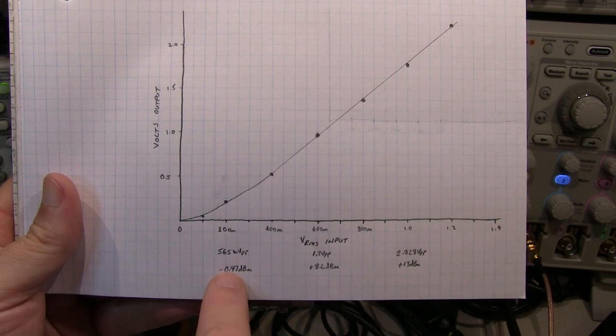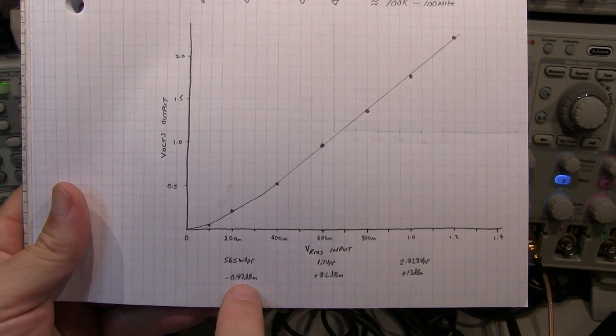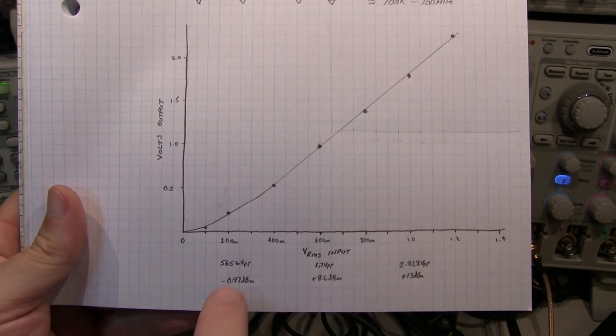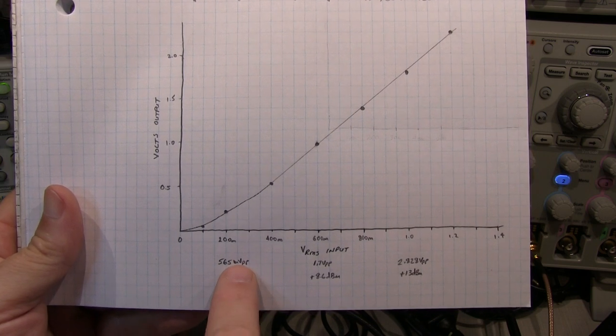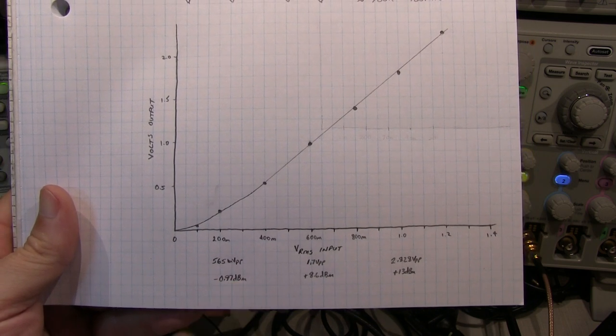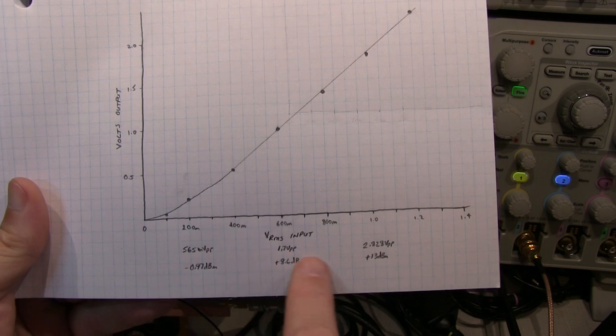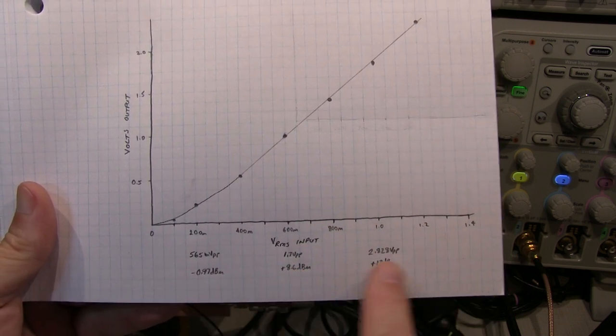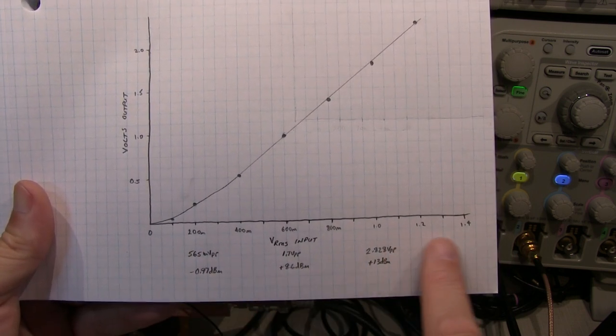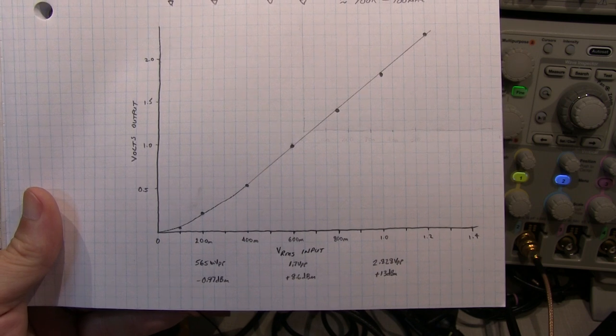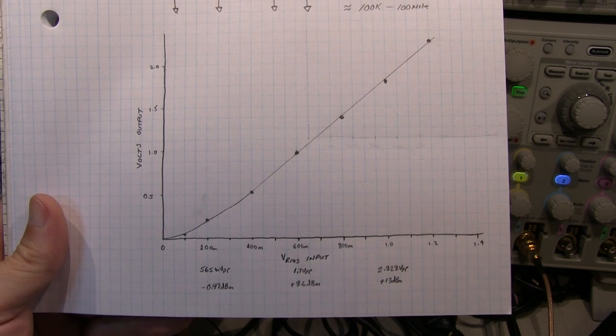So I just threw a couple of other numbers here for reference in terms of 200 millivolts RMS is about 565 millivolts peak to peak, or just about minus 1 dBm. And you can build your scale to whatever units make sense to the work that you're doing. So let's take a look at how we put this together.